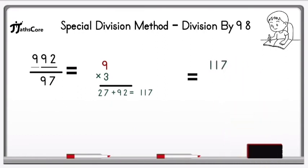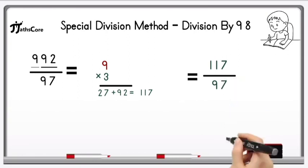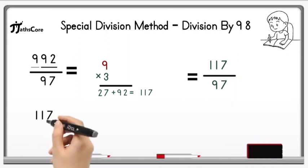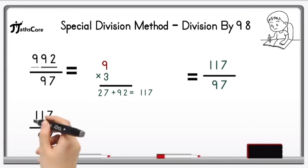Now take this 117 in the next step and divide it by 97. 117 is greater than 97, so we can proceed further.